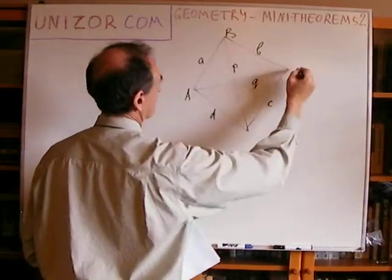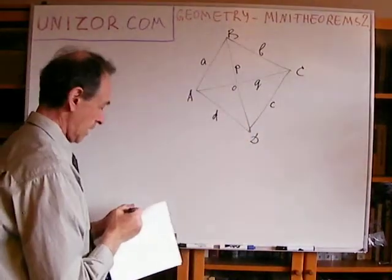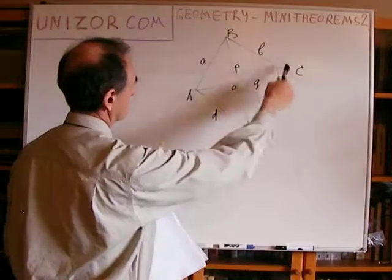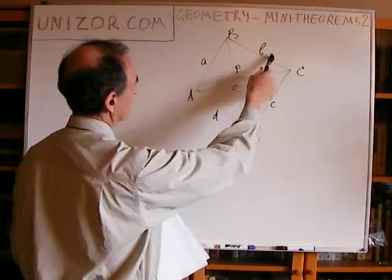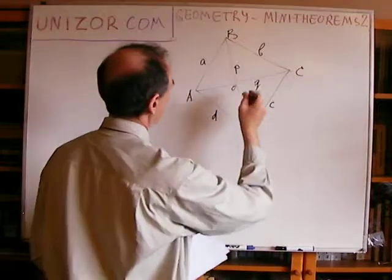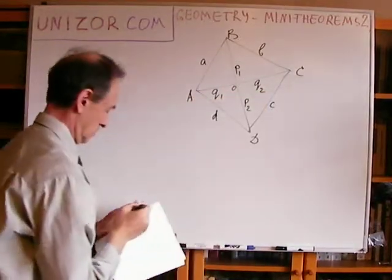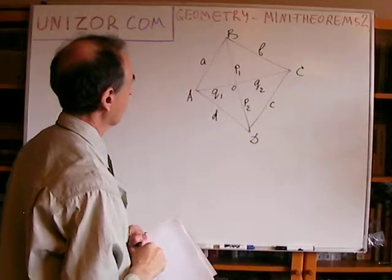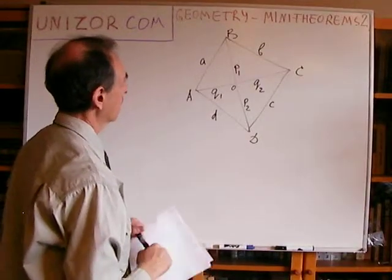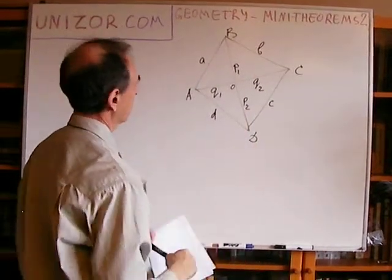I have this quadrangle A, B, C, D with sides having lengths A, B, C, and D. For my purpose, I probably have to break every diagonal into two pieces: P1 and P2 for one diagonal, and Q1 and Q2 for the other. I anticipate that this particular problem will require it. We have two different sub-problems inside this one. Number one: prove that the sum of the two diagonals is less than the perimeter.